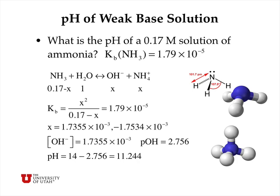The same approach works for the pH of a base solution. For a 0.17 molar solution of ammonia with Kb = 1.79×10⁻⁵, we write the base equation: ammonia reacts with water to form ammonium ion and hydroxide. Setting up the Kb expression with equilibrium concentrations and solving the quadratic gives x equal to the hydroxide ion concentration. Taking the negative base-10 logarithm gives pOH = 2.756, and subtracting from 14 gives pH = 11.244.